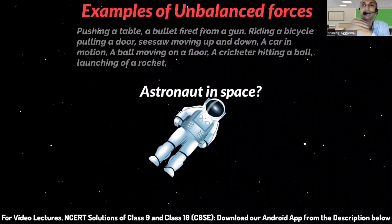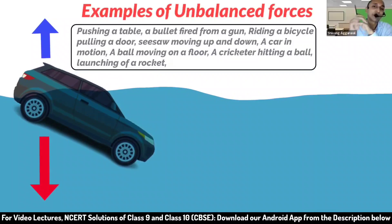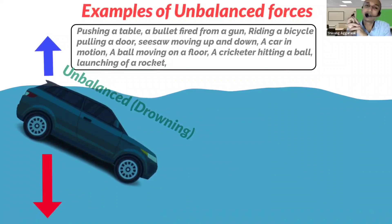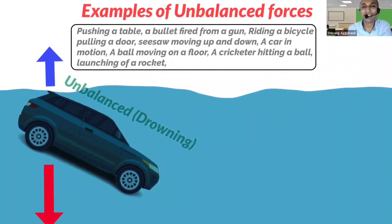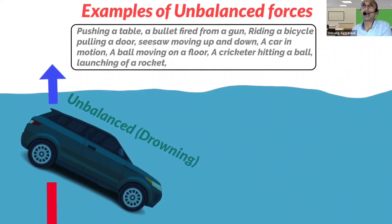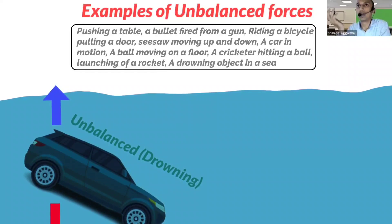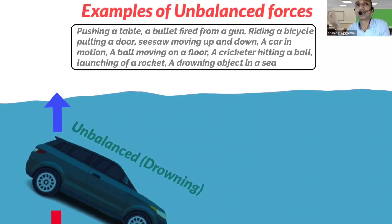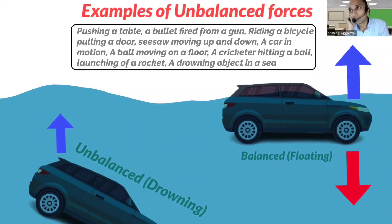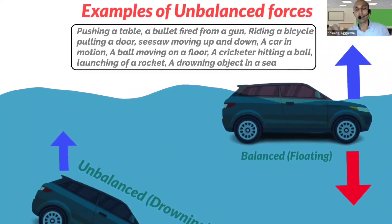Now suppose a car is given in a river — how does it look, balanced or unbalanced? A drowning car — a drowning object in a sea or river — is unbalanced. A floating object is balanced. Drowning is unbalanced; floating is balanced.